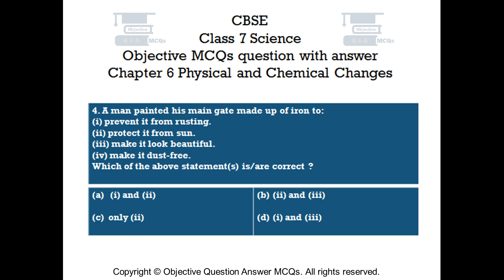Question number 4. A man painted his main gate made up of iron to: 1. Prevent it from rusting. 2. Protect it from sun. 3. Make it look beautiful. 4. Make it dust free. Which of the above statements is/are correct?